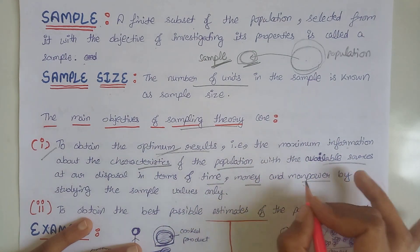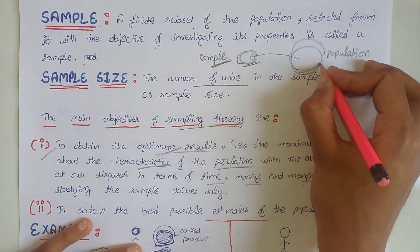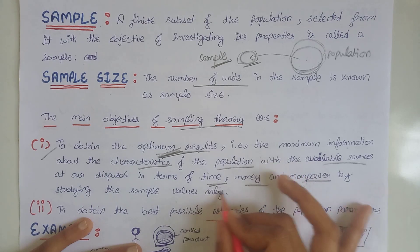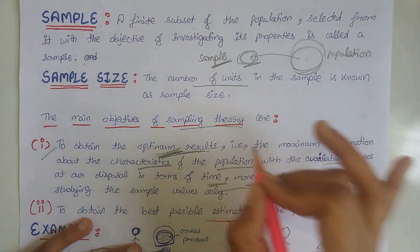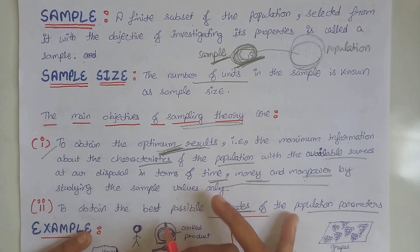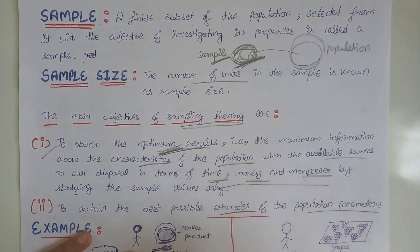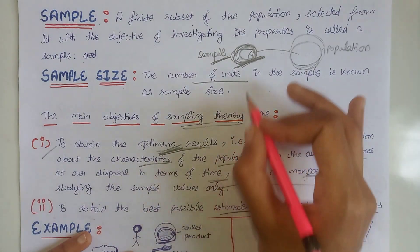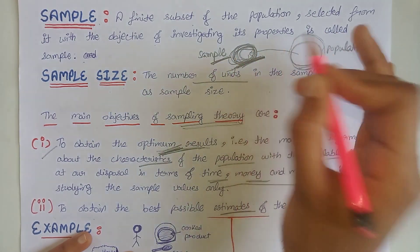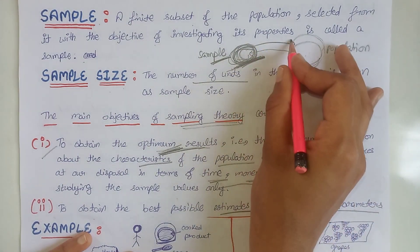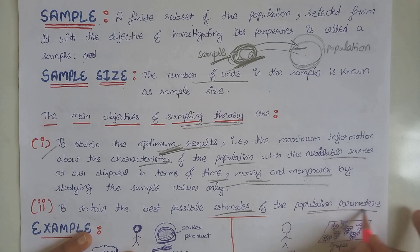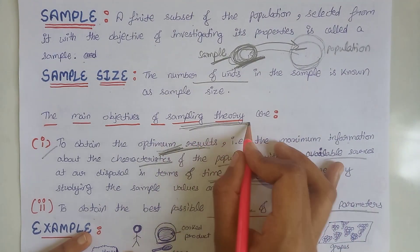It would be very difficult to investigate the whole population with only available sources, so we can get optimum results by investigating only the sample values. The second objective is to obtain the best possible estimates of the population parameters. The results of the characteristics of the sample must serve as estimates for the characteristics of the population.